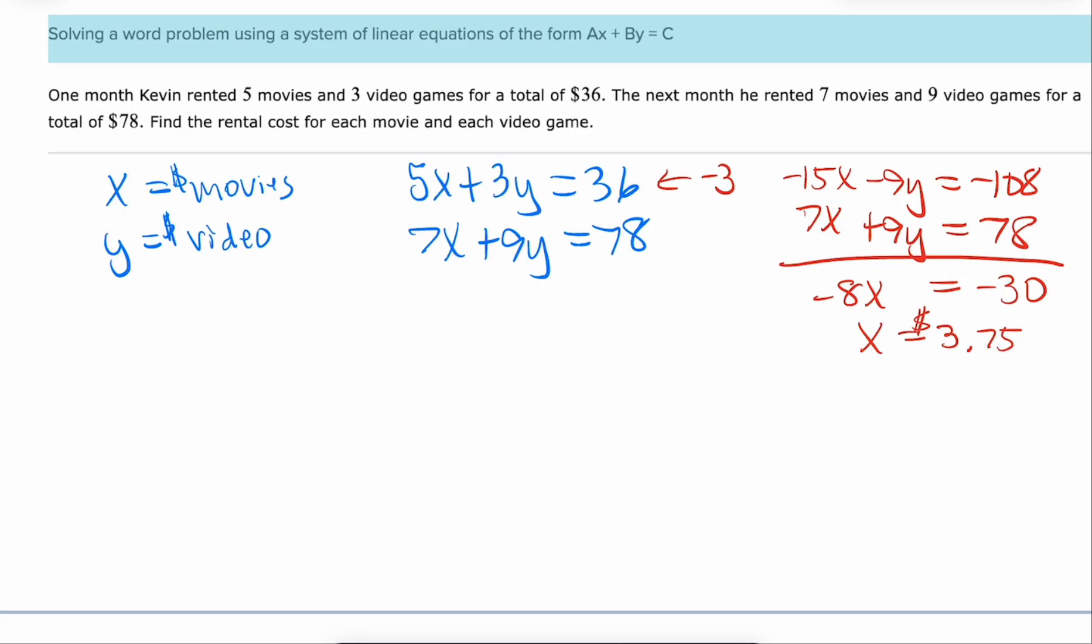Now that we've got that we still need to know the cost of a video game. So let's substitute into this top one. Doesn't matter. They're both equally kind of yucky. We're going to do 5 times 3.75 plus 3y equals 36. 5 times 3.75 is 18.75. Subtract 18.75 from both sides. We get that 3y is 17.25. And if we divide by 3 we get that the cost of a video game is $5.75.